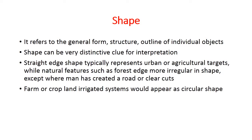The next element is shape. It refers to the general form, structure, and outline of an individual object. Shape can be a very distinctive clue for interpretation. Straight-edged shapes typically represent urban or agricultural targets, while natural features such as forest edges are more irregular in shape, except where man has created a road or a clear cut. When a man-made feature is present, the edges are clearer and the shape is more defined.